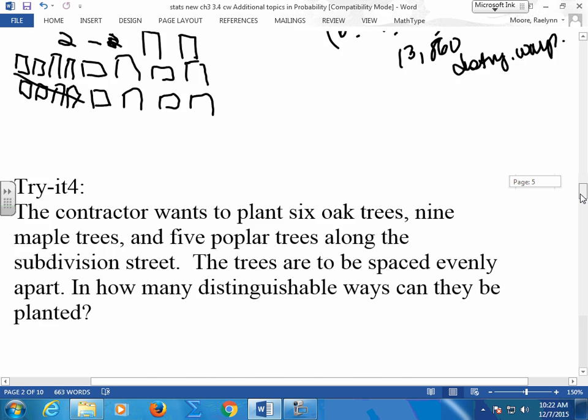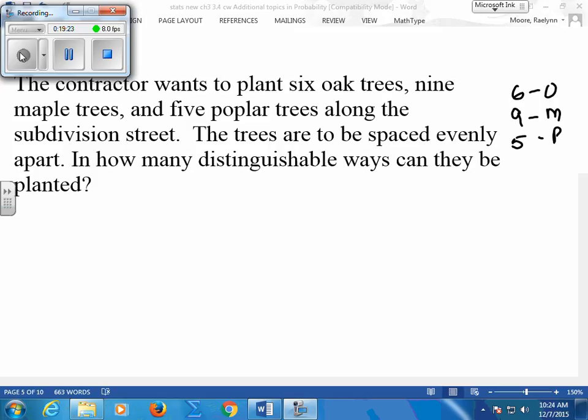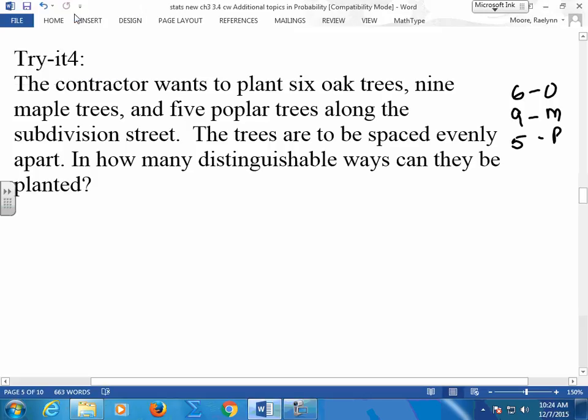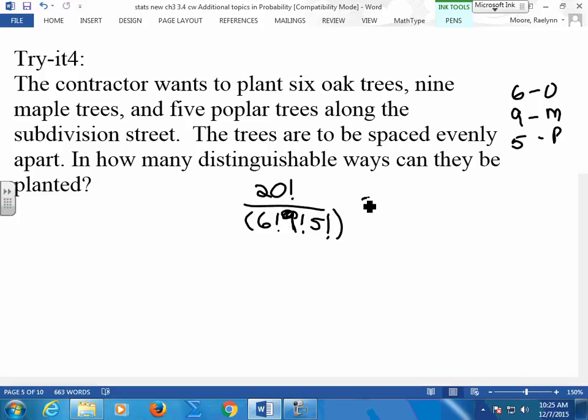So you guys try this one. They do the same thing with trees. I did 20 factorial divided by 6 factorial. Yeah, 20 factorial. Divide by 6 factorial, 4 factorial. Why 4? These are the last numbers. 9 factorial, 5 factorial, 6 factorial. 7,597,510. Did everybody get that? 7,597,510. Those are a lot of different ways to set up those trees, isn't it? And still make them look different. You okay with the permutations?